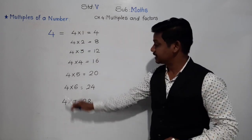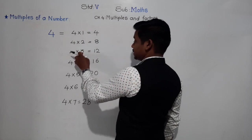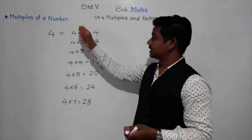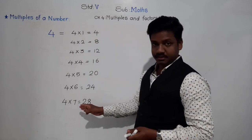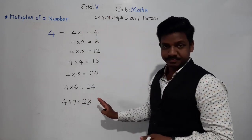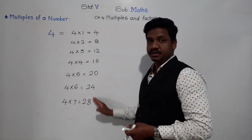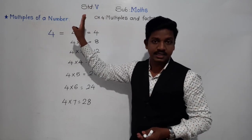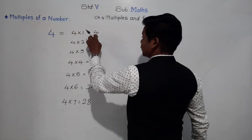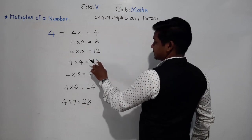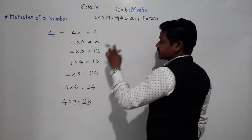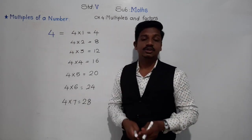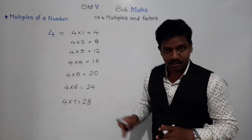So, if 4 is multiplied by any natural number — 1, 2, 3, 4, 5, 6, 7 and so on — the products obtained are the multiples of 4. These numbers — 4, 8, 12, 16, 20, 24, 28 — are the multiples of 4.